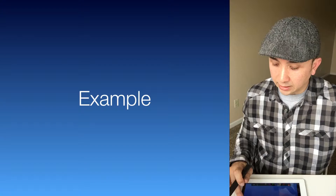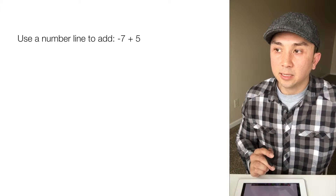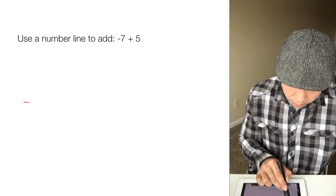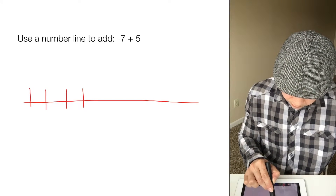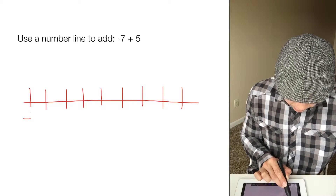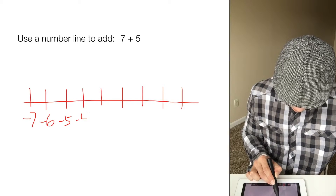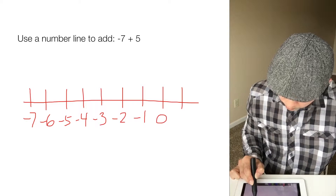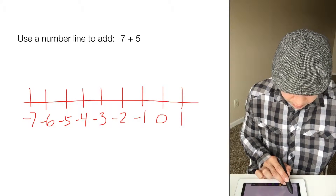So let's do an example. Let's use the number line to add negative 7 plus 5. The first thing we're going to do is draw a number line and start at negative 7.